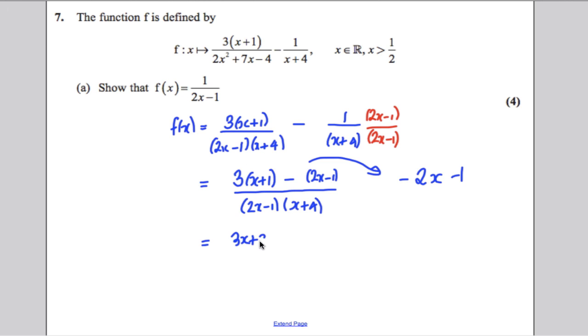So let's expand that now. This is 3x+3, subtract 2x and then negative negative 1 is plus 1, all divided by (2x-1)(x+4).